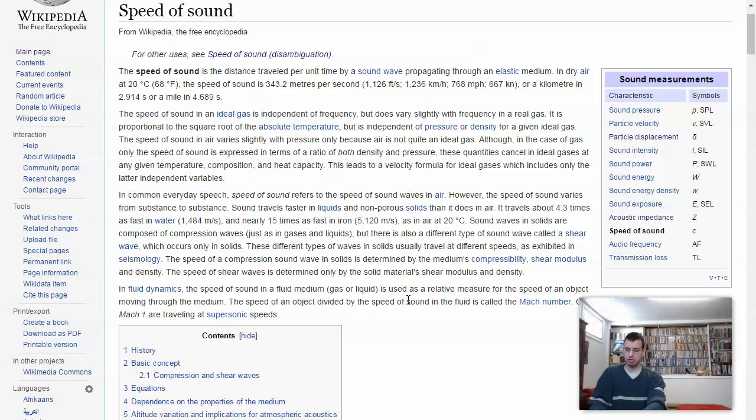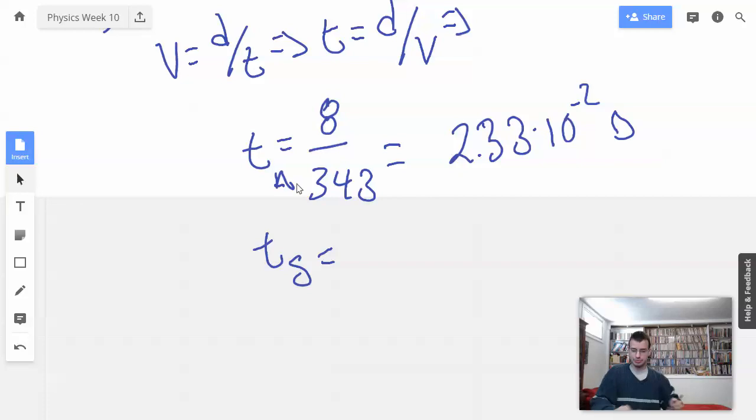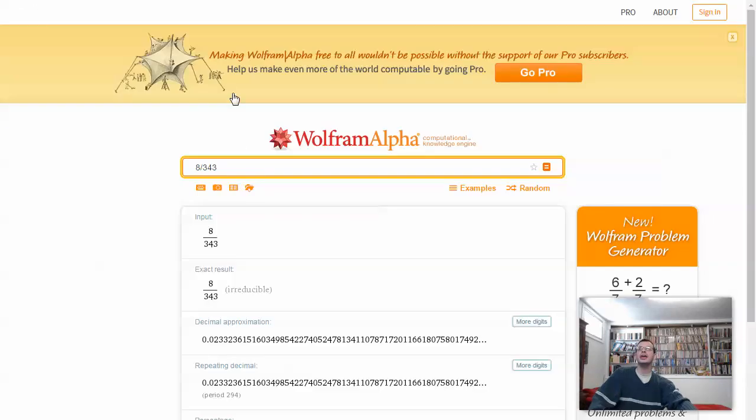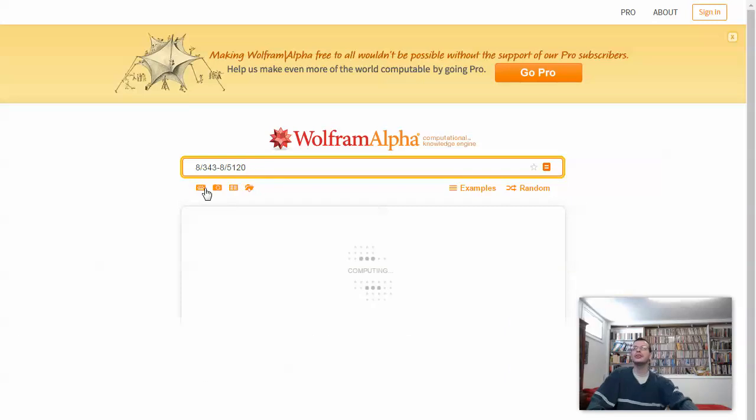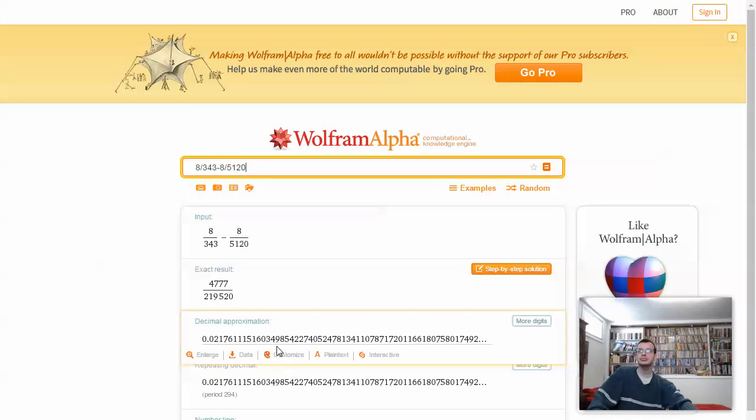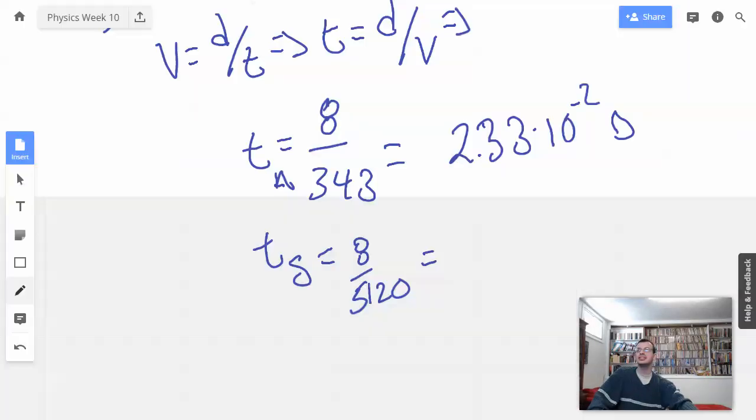I'm just going to do iron. Iron. 5120. Bam. So, 8 divided by 5120. Say what? 15 times maybe? So, 8 divided by 5120. 5120. 2.176. 2.176 times 10 to the negative second. All right.